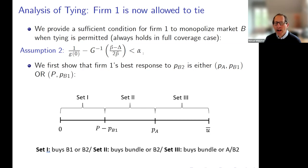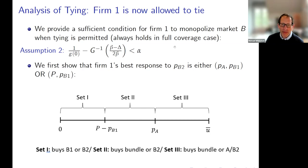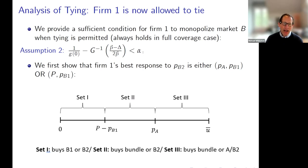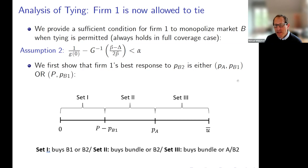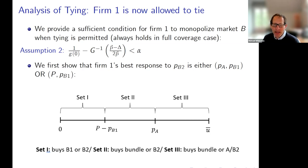The first thing we show is that without loss of generality, you can just think of firm one as either optimally best responding with independent pricing, or alternatively optimally responding with tying — effectively a tying contract where it only offers a bundle at price capital P and product B1 at a price P_B1, but does not offer product A separately.